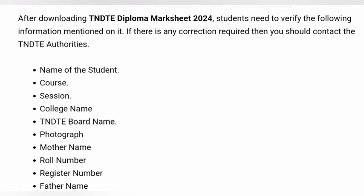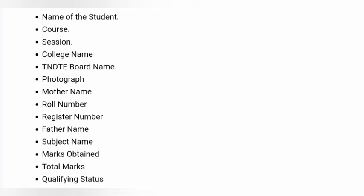I will check the results on the mark sheet. The mark sheet contains fields such as: name, course, session, college name, TNT board name, photograph, mother's name, roll name, risk number, and father's name. We have to check the results of the program.